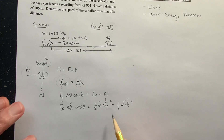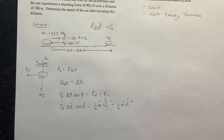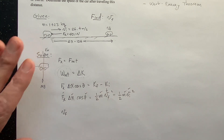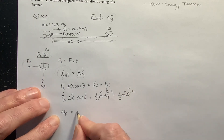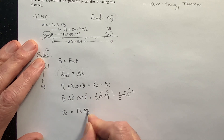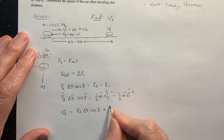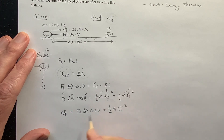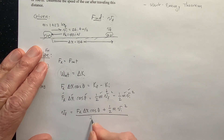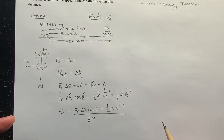So now it's just algebra. I'm going to do it in one step — you can do it in multiple steps if you want, I encourage you to do that. I'm going to solve for V final. So what do I have to do? First I have to get this to the other side — I'm going to add one-half m v initial squared to this side. So I have the retarding force times delta x times cosine theta, plus one-half the mass times the initial velocity squared. And now I've got to get rid of this one-half m — I'm going to divide by one-half of the mass.